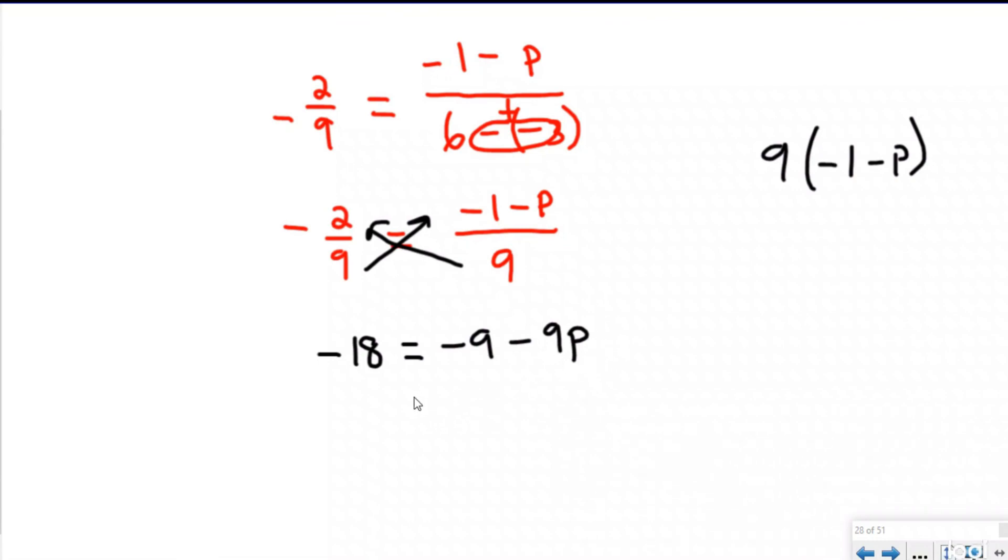And now I'm just solving for my variable. Now it's just a linear equation. And so I want to get rid of my negative 9 by adding 9, so whatever I do to one side, do to the other. So negative 18 plus 9 would be negative 9 equals—these have now cancelled out—negative 9p. The inverse operation of multiplication is division, so I'm going to divide each side by negative 9, which will cancel those out. So I think that 1 equals p. So my missing ordered pair here was 1.